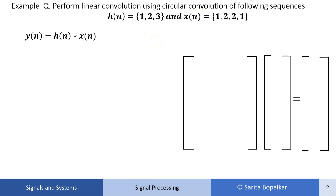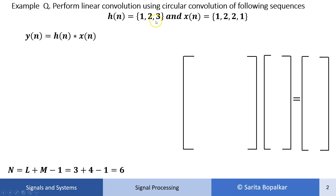First, let us see how many samples we will get in the linear convolution. It depends upon the length of these sequences. N = length of y[n] = L + M - 1, where L is the length of h[n] which is 3, and M is the length of x[n] which is 4 samples. So 3 + 4 - 1 = 6. The number of samples in y[n] is 6.